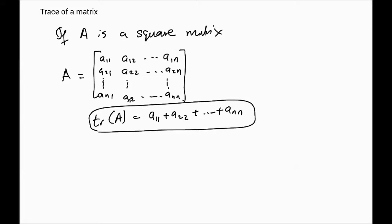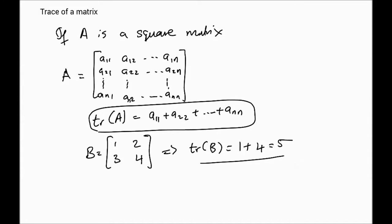So that's, in a nutshell, the trace of a matrix. Quick example. Let's take this matrix. This is a square matrix, and let this be the matrix B. And this implies that the trace of B is simply 1 plus 4 equals 5. So that's the trace of a matrix. Here we will list some properties of matrix arithmetic,